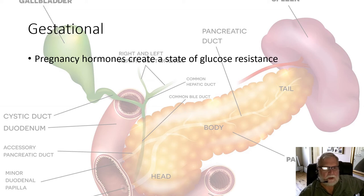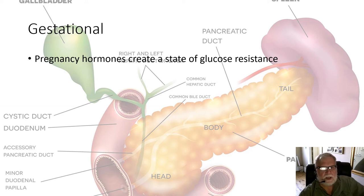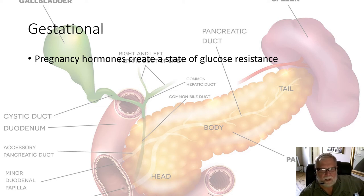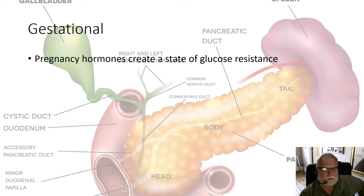As noted, gestational diabetes occurs because pregnancy hormones create a state of glucose resistance similar to what type 2 diabetes does, and these women are at greater risk of type 2 diabetes later on in life.